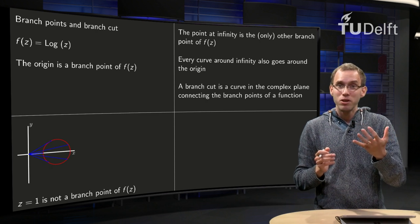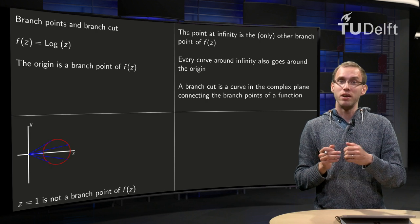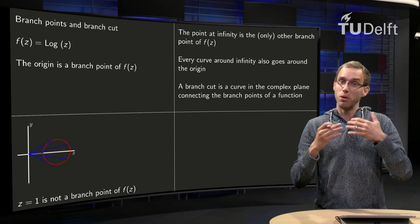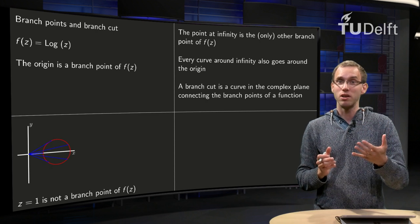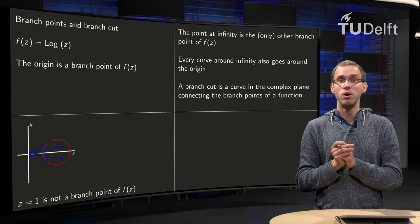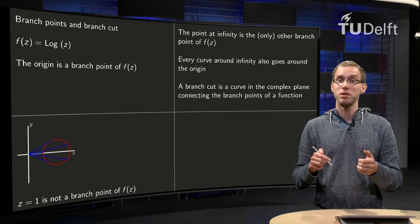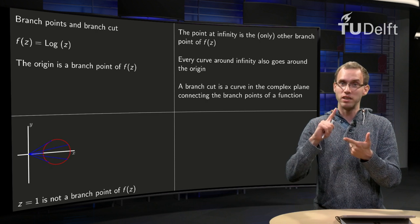So that means if you go around the point at infinity, you have the same problem as when you go around the origin. That means that the point at infinity is also a branch point of the logarithm. So the logarithm has two branch points, 0 and infinity.